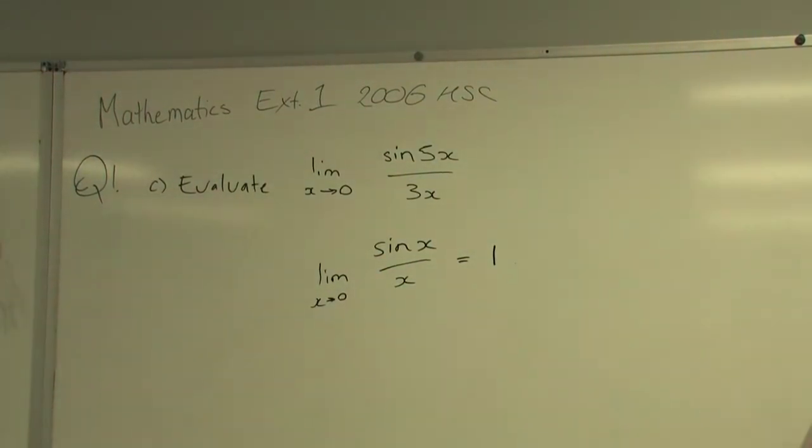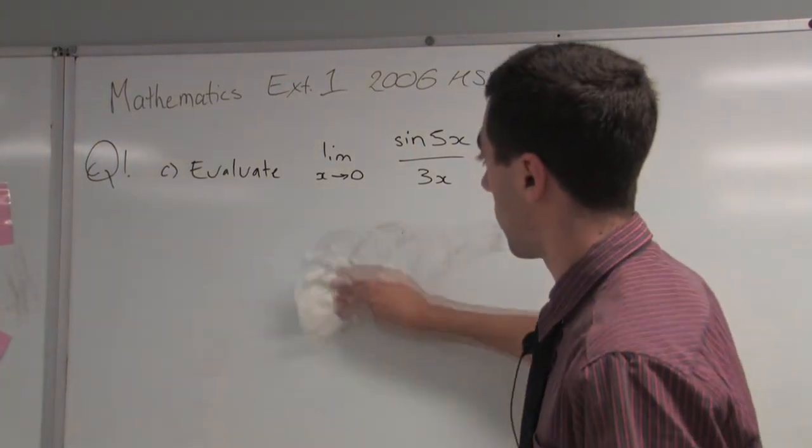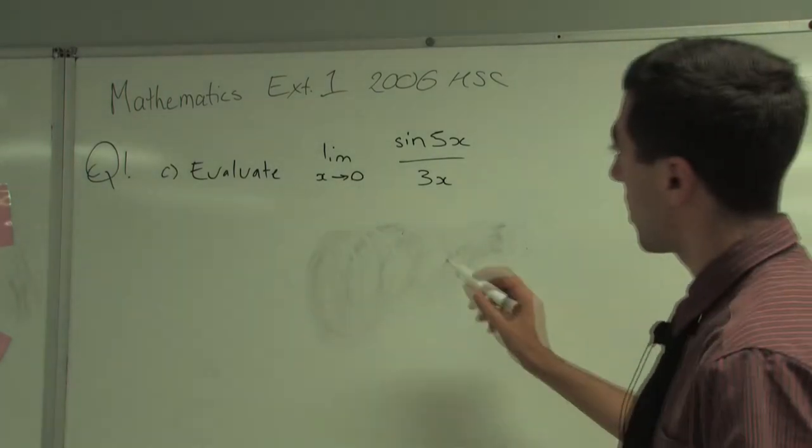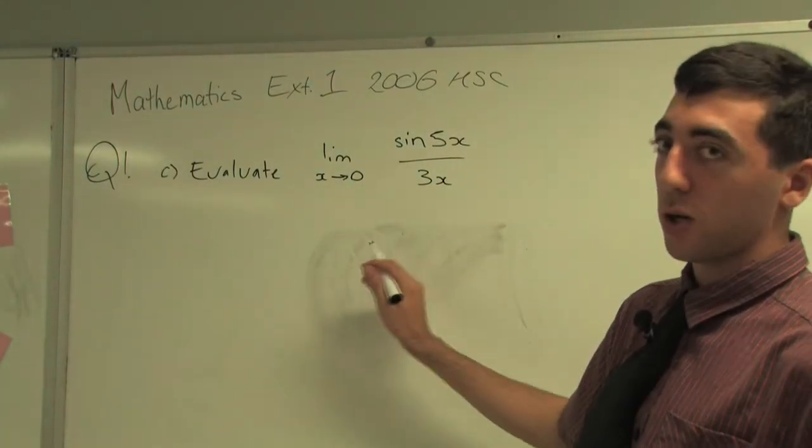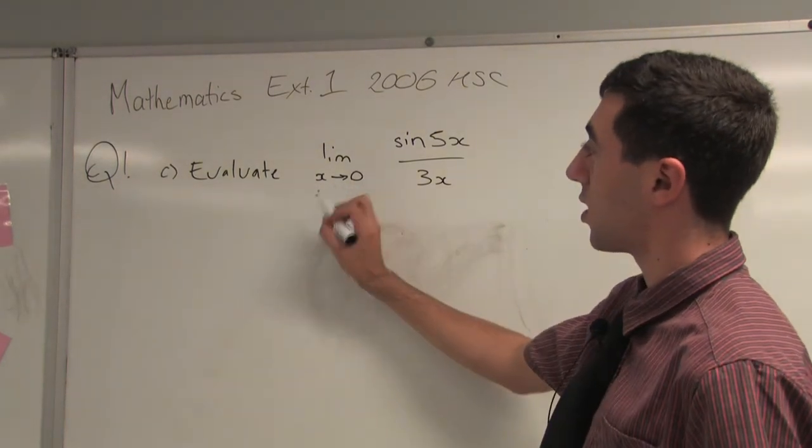Using that, we can establish that we can also do that for the above question. When x approaches 0, we can also say that 5x will approach 0, as we're multiplying both sides by 5.